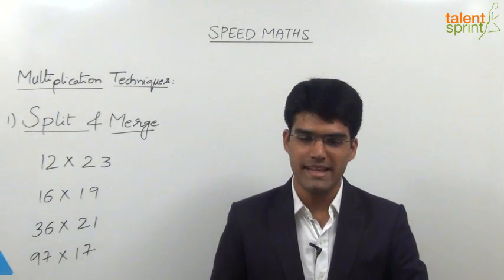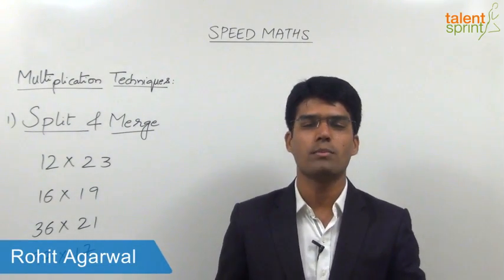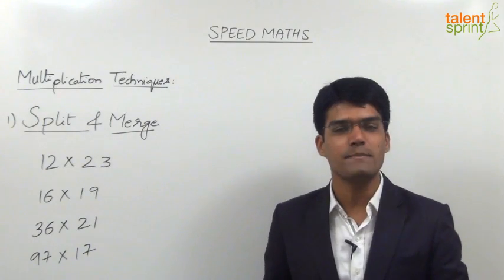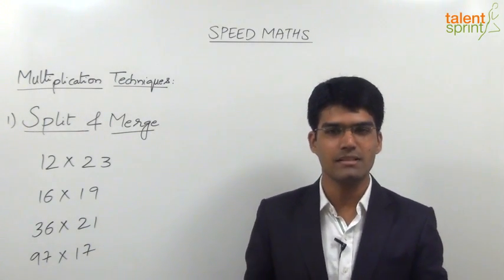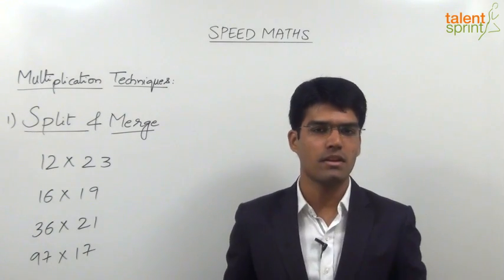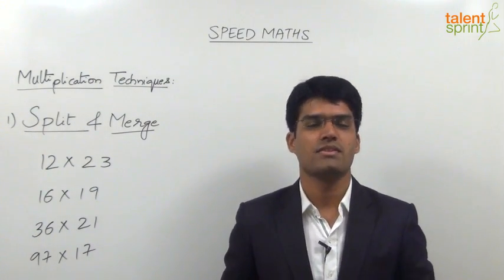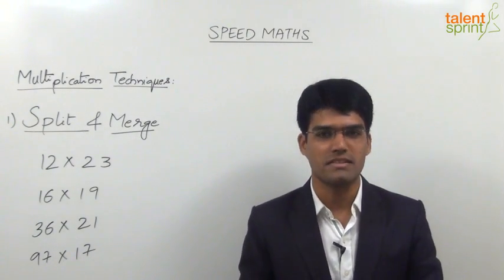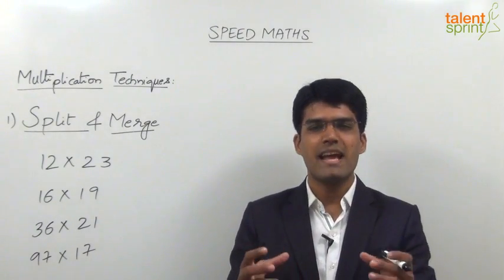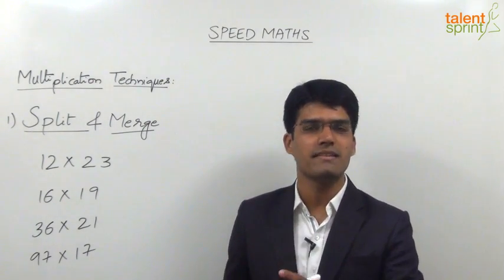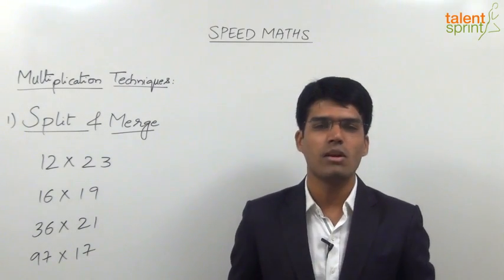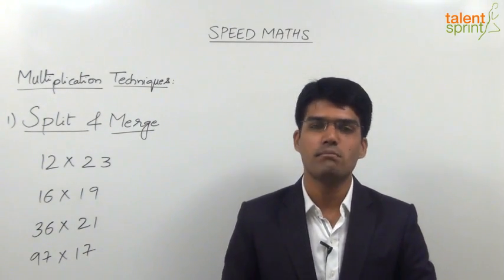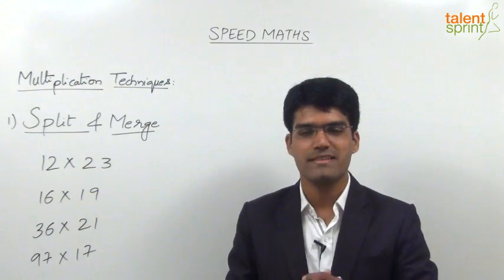Let us now learn the various multiplication techniques which can help us find the product of two numbers in a faster way. The first technique we are going to understand is called split and merge — that is, break the number into two parts as per your convenience and then merge the individual calculations. A similar concept was discussed in case of additions: split the number, add tens, units, and hundreds places separately, then merge all the answers. A similar technique can also be applied in simple multiplications.